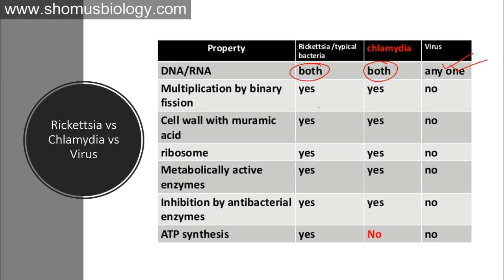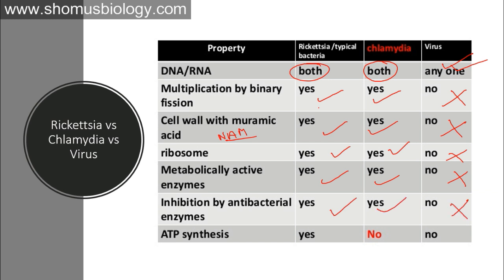Multiplication by binary fission is only possible for Rickettsia and Chlamydia because they are bacteria — not for viruses. Cell wall containing muramic acid (N-acetylmuramic acid, NAM) is present in Rickettsia and Chlamydia, but not in viruses. Ribosomes are present in both Rickettsia and Chlamydia but not in viruses. Metabolically active enzymes are absent in viruses, which only carry genetic material. Rickettsia and Chlamydia are inhibited by antibacterial antibiotics, but viruses are not — they require antivirals.